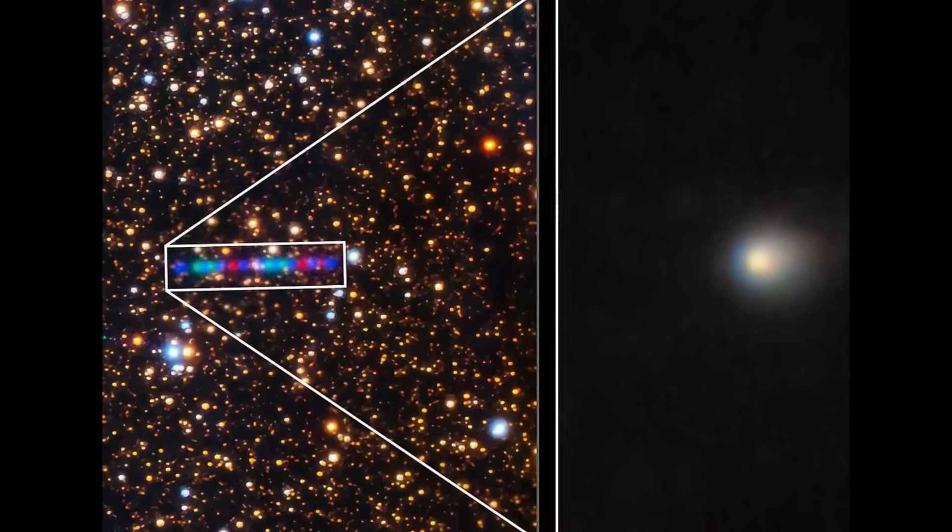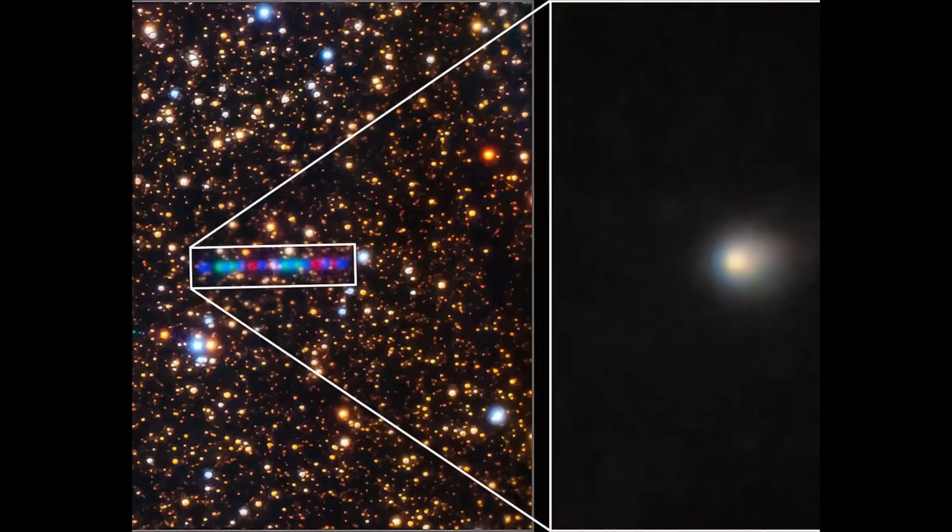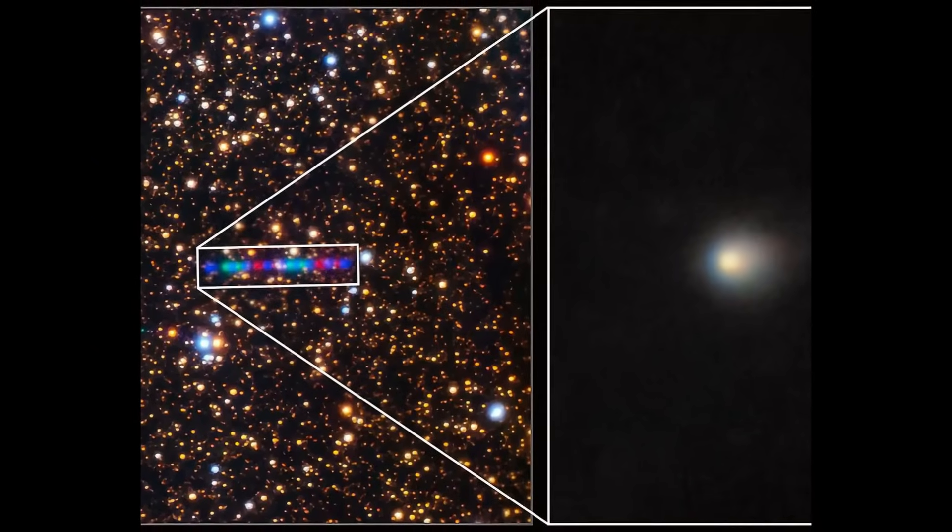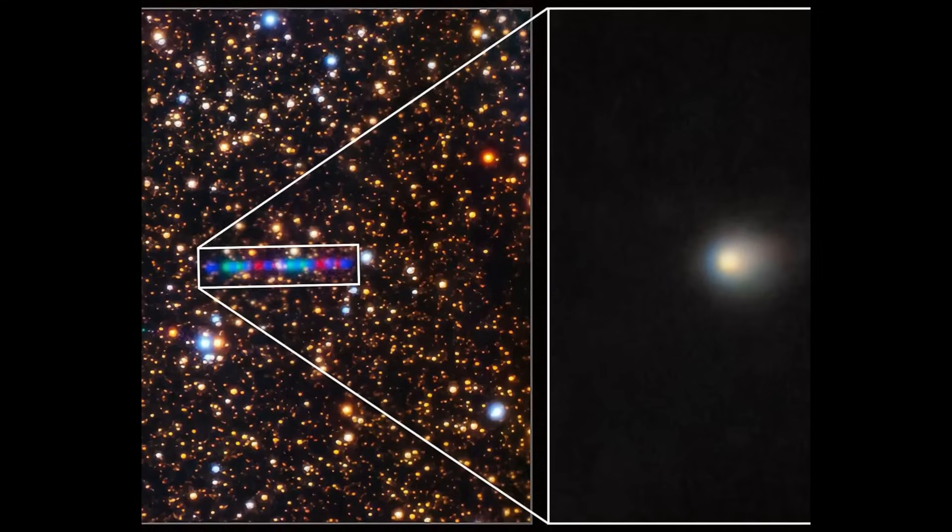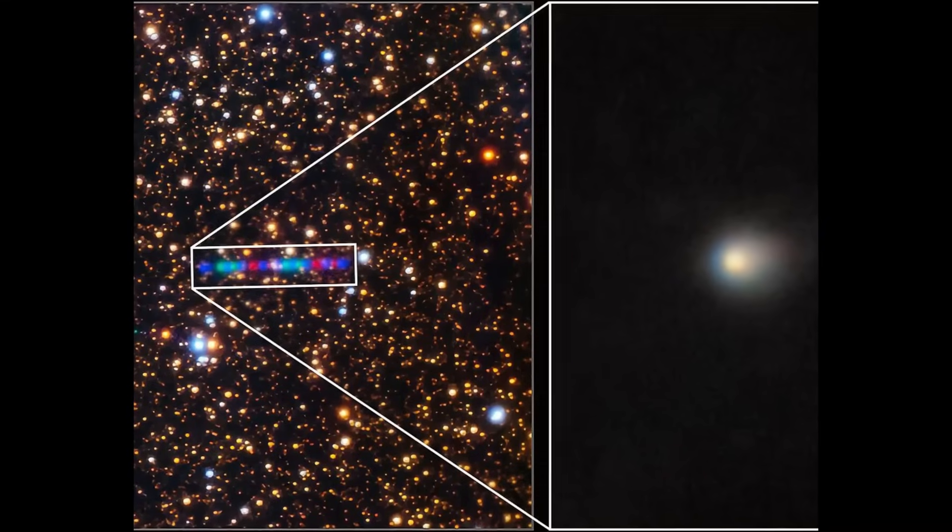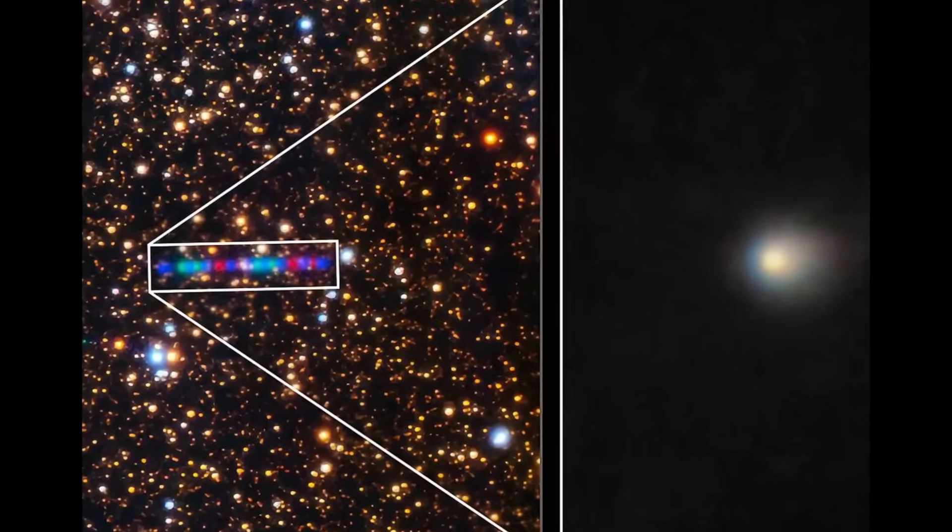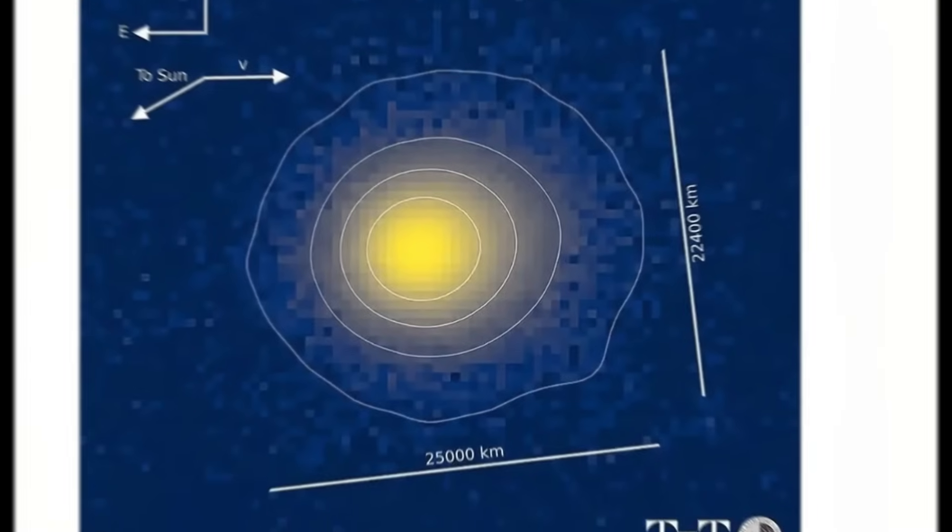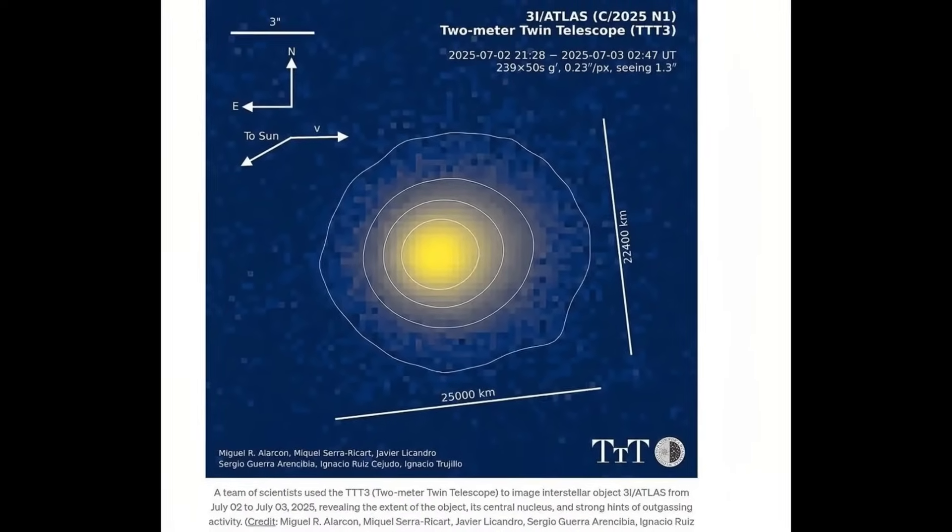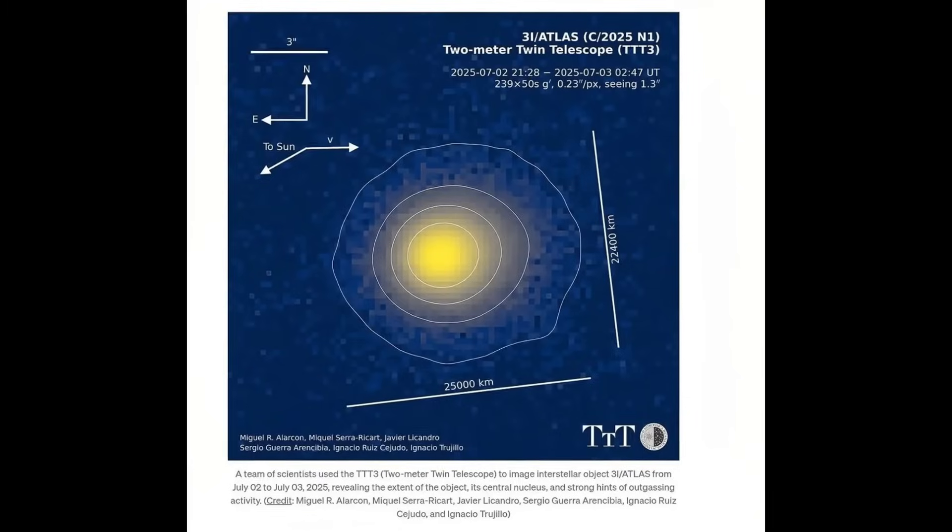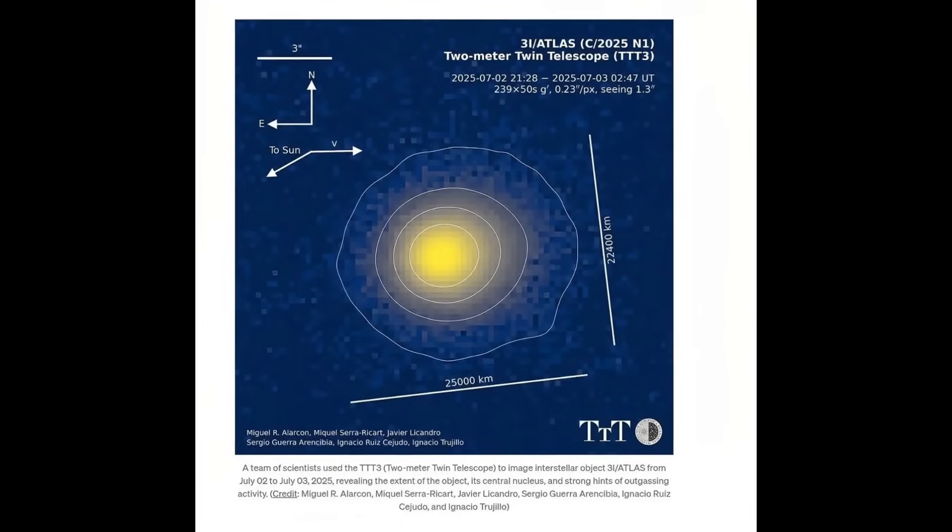Amateur astronomers equipped with powerful backyard telescopes and professional facilities alike rushed to capture data. Some argued that variations in aperture size and technique explained the discrepancies. Yet, as more observations arrived, a consensus began to form. The brightening was intrinsic, linked not just to the expansion of the coma, but likely to activity in the nucleus itself.